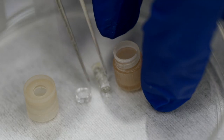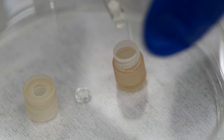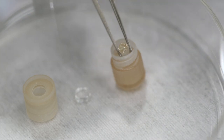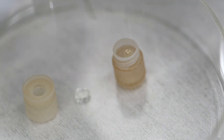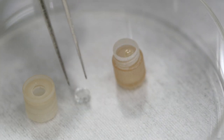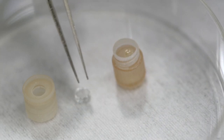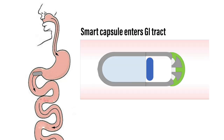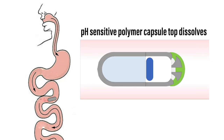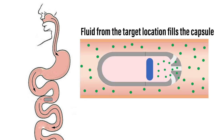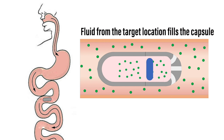The capsule is composed of a 3D printed container that holds a superabsorbent hydrogel. Upon entering the GI tract, the pH sensitive polymer on top of the capsule will dissolve. The fluid inside the targeted location will then enter the capsule.